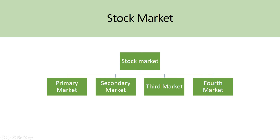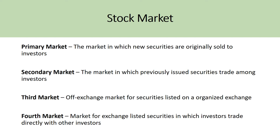The stock market can be divided into four different types of markets: the primary market, the secondary, the third, and the fourth market. The primary market is where newly issued securities are sold to investors — this is where IPOs and SEOs usually fit in, and this is where underwriting is done.